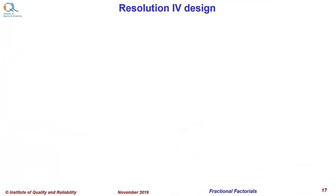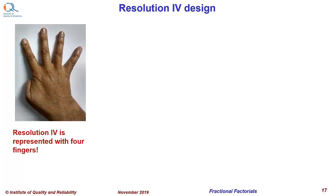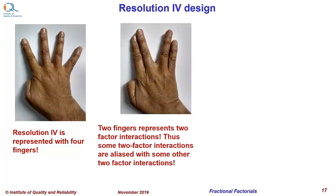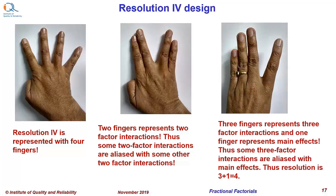Now let us look at resolution 4 design. Resolution 4 design is represented with four fingers of the hand. You can have a combination of two and two fingers, where two fingers represent two-factor interactions. Thus, some two-factor interactions are aliased with some other two-factor interactions. The other possible combination is 1 and 3, where three fingers represent three-factor interactions and one finger represents main effects. Thus, some three-factor interactions are aliased with main effects. The resolution code is therefore 3 plus 1, that is equal to 4.